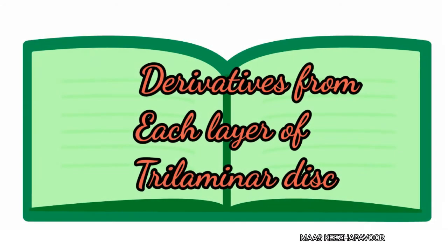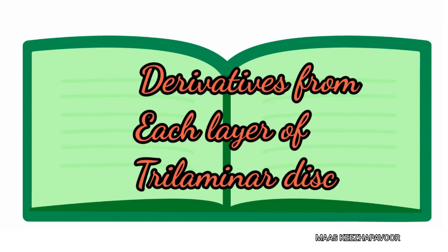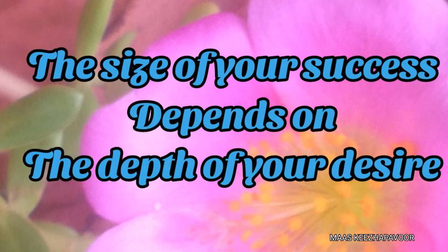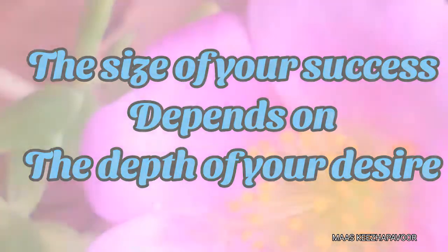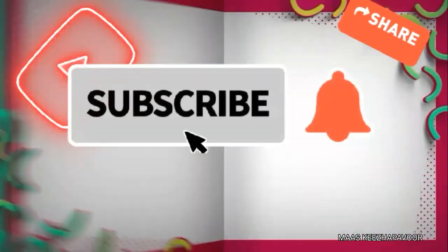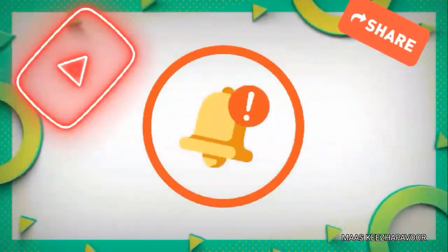In the next video, let us enumerate the structures derived from each layer of the trilaminar germ disc. Remember, all the tissues and organs of the human body are derived from one or more of these germ layers only. The size of your success depends on the depth of your desire. Thank you for watching. If you like this video, don't forget to subscribe and click the bell icon and select all to get instant notifications. See you soon.